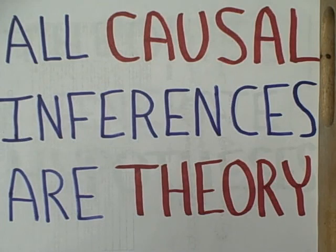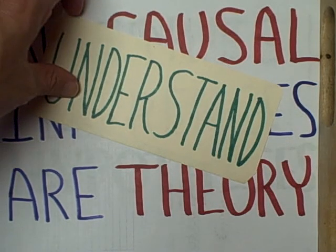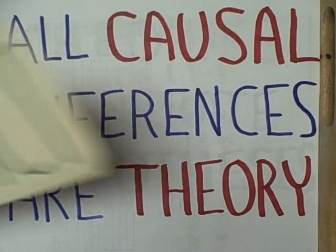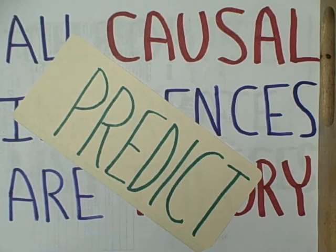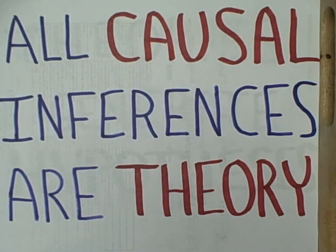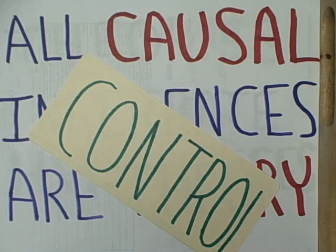Some theories help us understand causally the relationship between two variables. Other theories allow us to predict something — we observe a cause and predict its forthcoming effect, or we observe an effect and predict which cause must have produced it. Theories also allow us to control the environment through technology; we develop a causal theory that allows us to change the environment, treating causes as means to produce an effect.